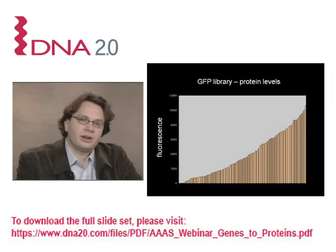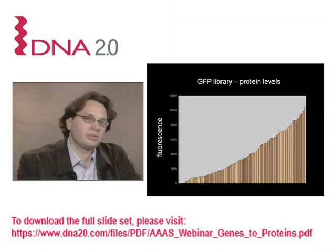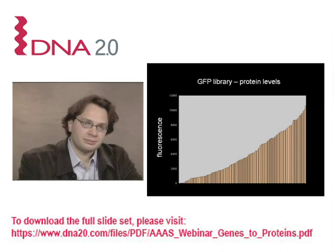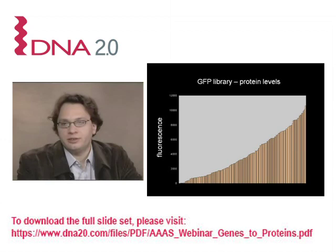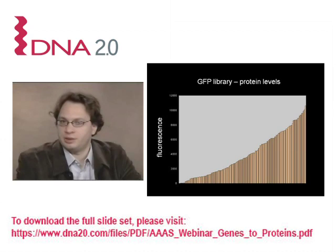Across the whole library there is around 250-fold variation in the fluorescence levels, all arising from synonymous mutations — in every case these proteins encode the same wild-type GFP sequence. These fluorescence levels were highly reproducible across different experimental conditions, different temperatures, different initiation times, and were verified by Western blotting, Coomassie, and other methods of estimating protein levels, so we believe they are fairly accurate representations of protein levels.